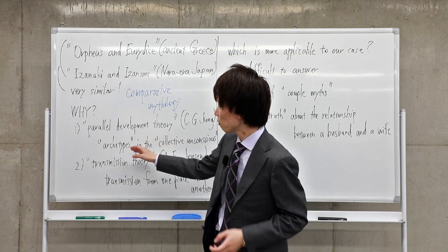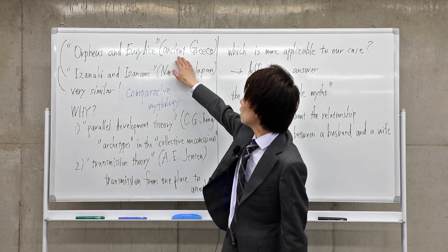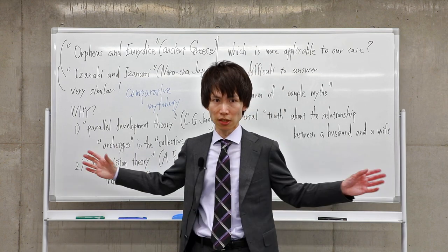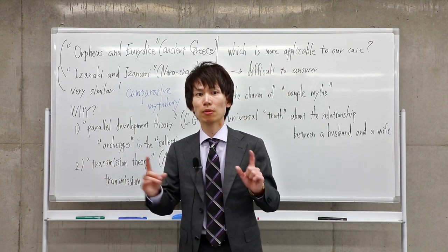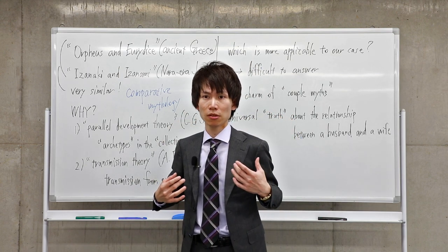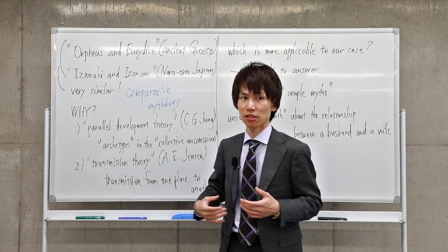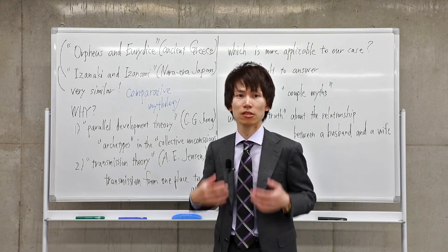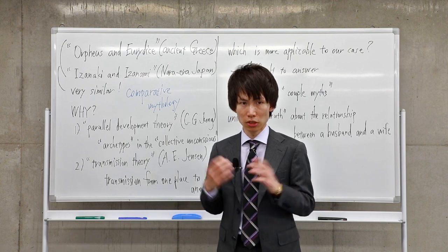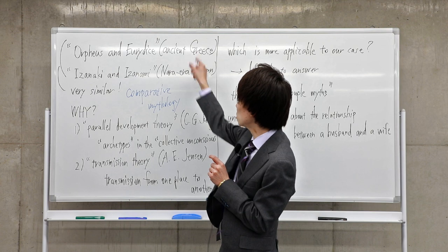So if we apply this theory to our case, ancient Greece and Nara-era Japan, although they are very distant from each other in time and place, they share the collective unconscious. That's why they create the same story type and character type. For Jung, it was not surprising to find the similarity between these two stories.